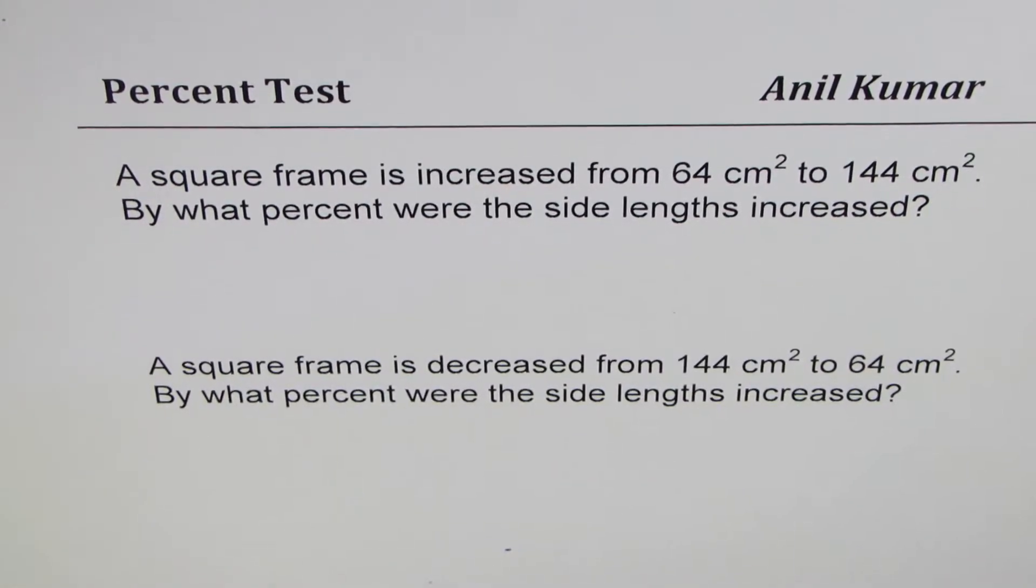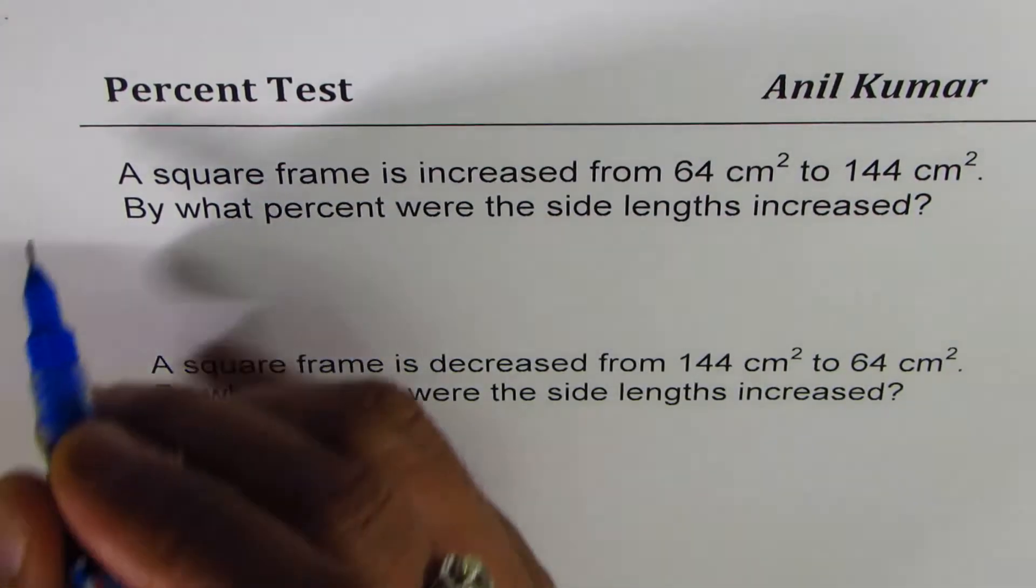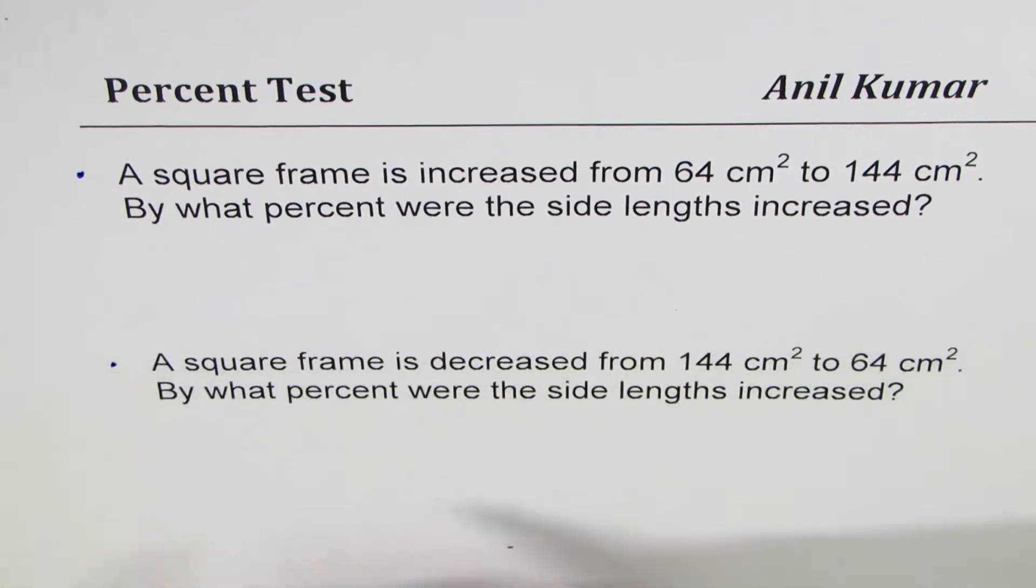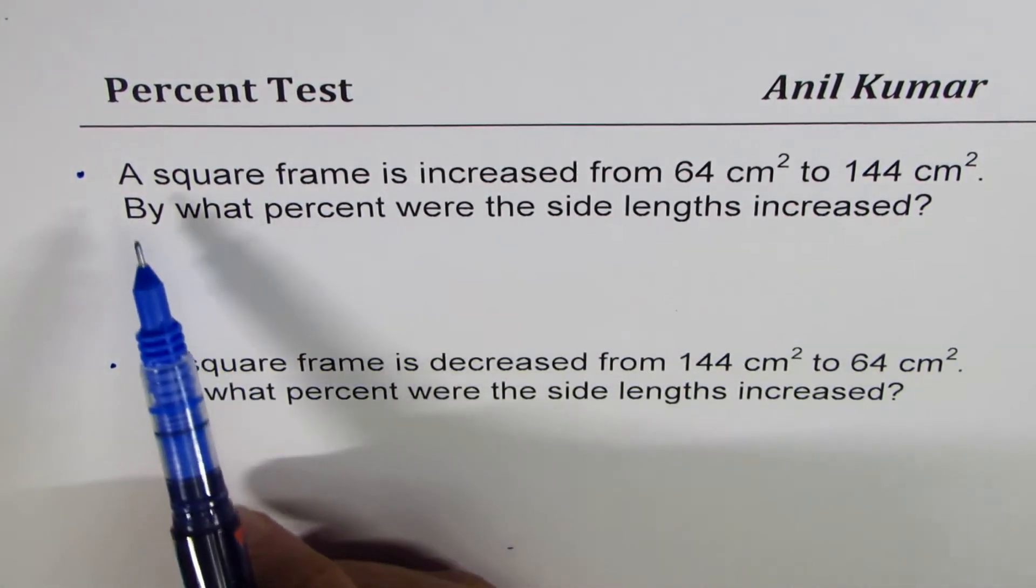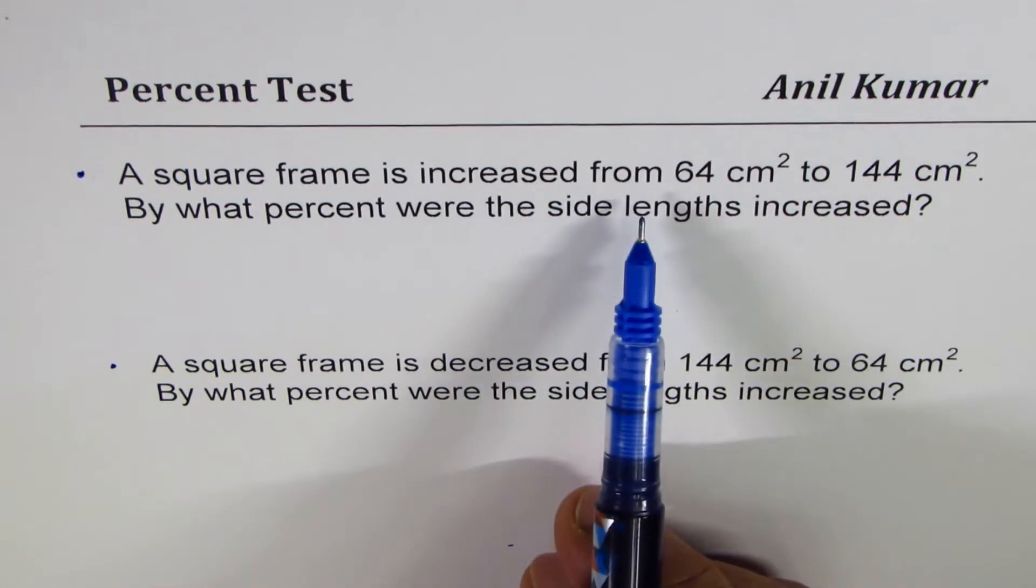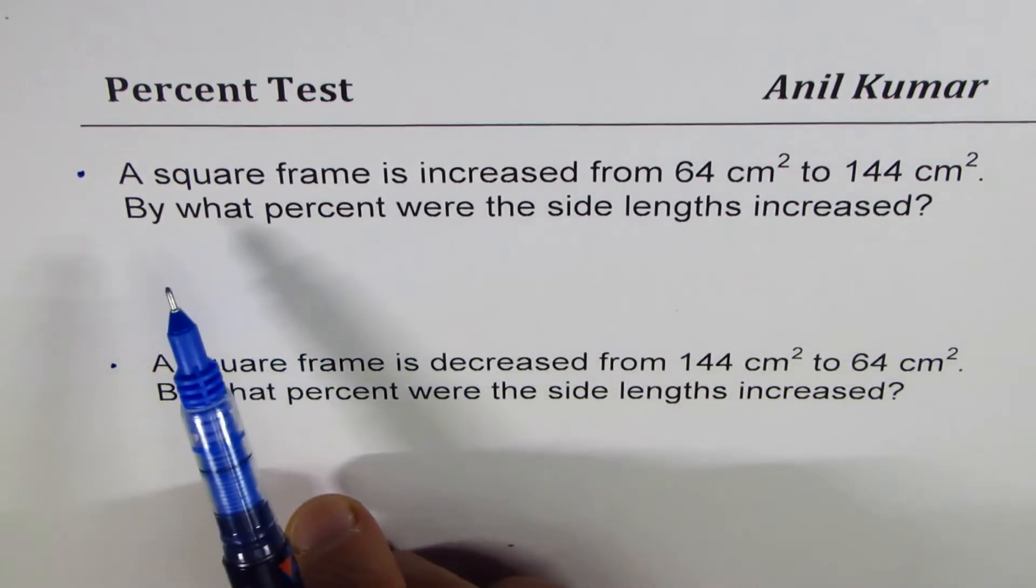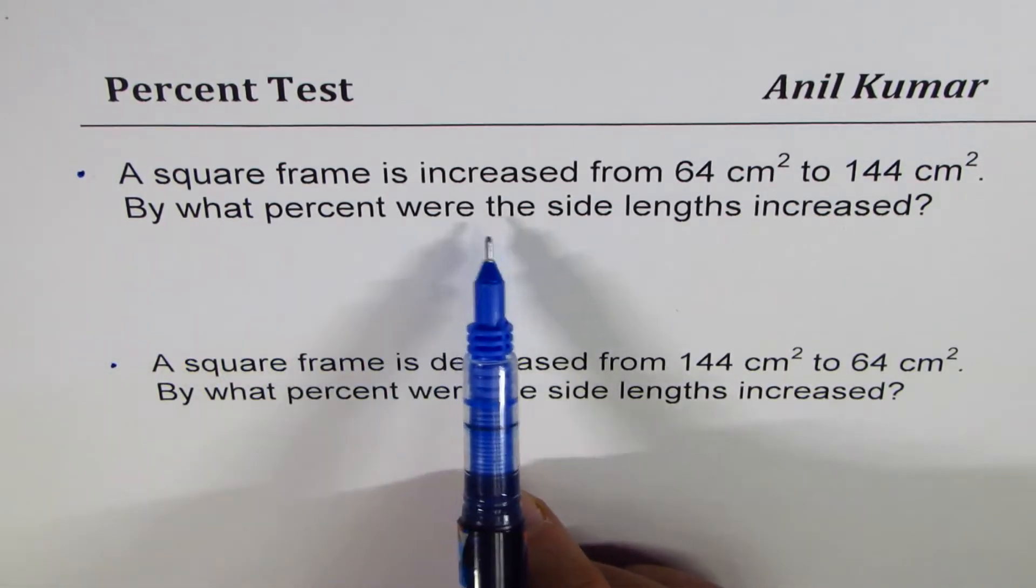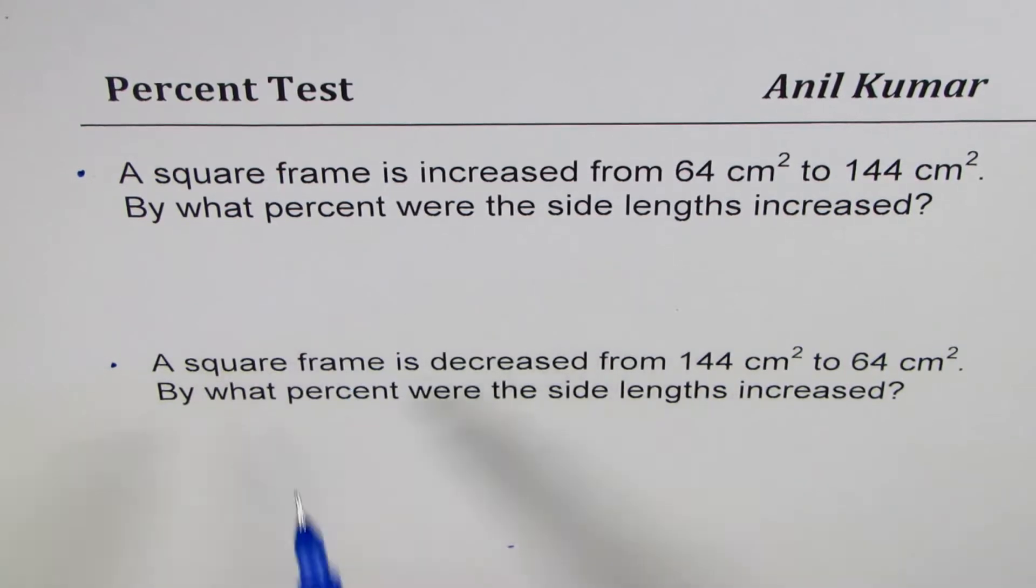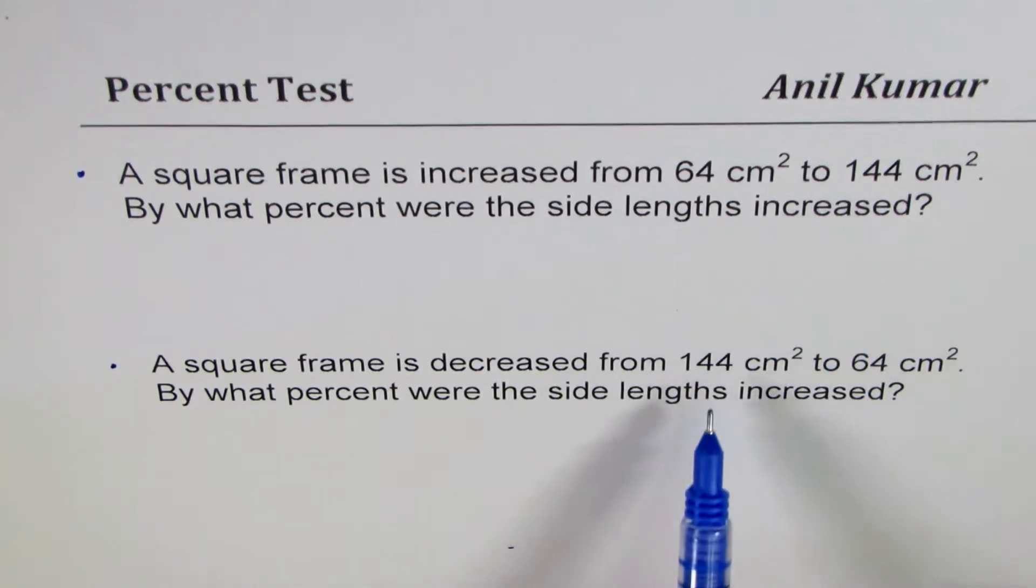I am Anil Kumar sharing with you a very interesting question on percent. We have two questions here with very similar values. First one is: a square frame is increased from 64 centimeter square to 144 centimeter square. By what percent were the side lengths increased? The second question is: a square frame is decreased from 144 centimeter square to 64 centimeter square. By what percent were the side lengths...